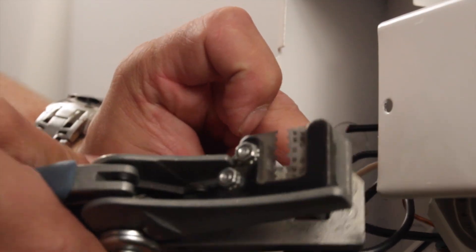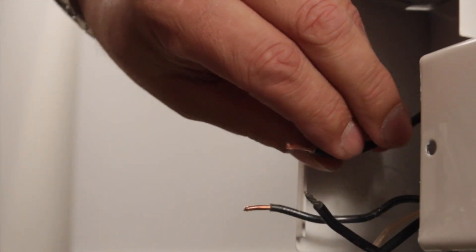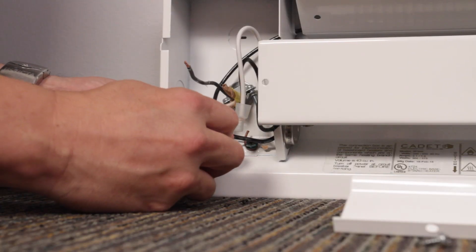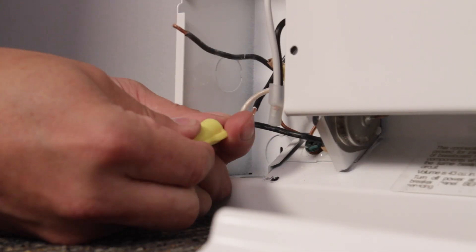Now strip the wires with wire strippers. You want about a quarter to a half inch of bare copper wire exposed. Connect one black wire from the heater to the white wire from the wall. It does not matter which wire you hook up first.